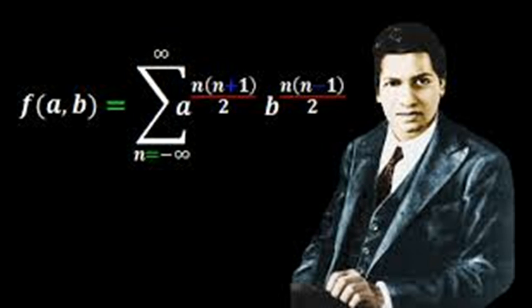You've called Ramanujan math's greatest anticipator. What do you mean by that? Well, so as you mentioned a moment ago, Ramanujan died very young, at the age of 32.